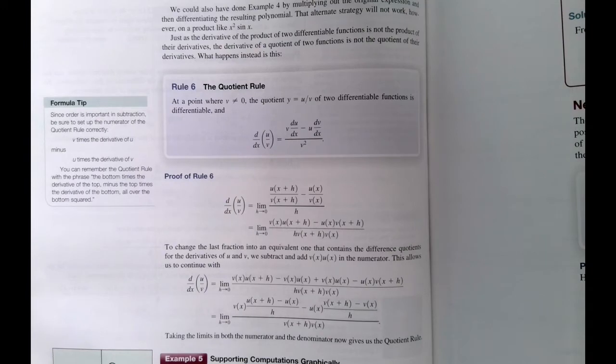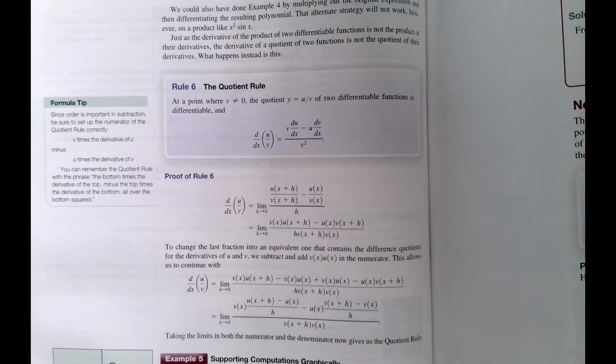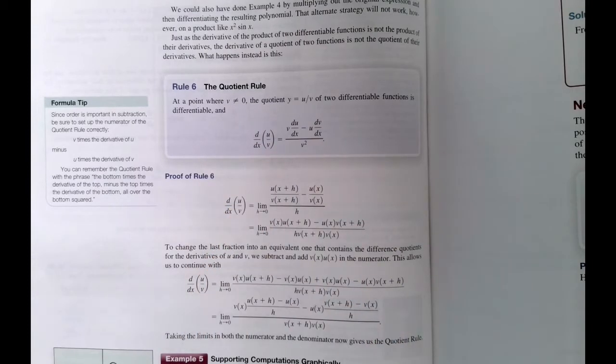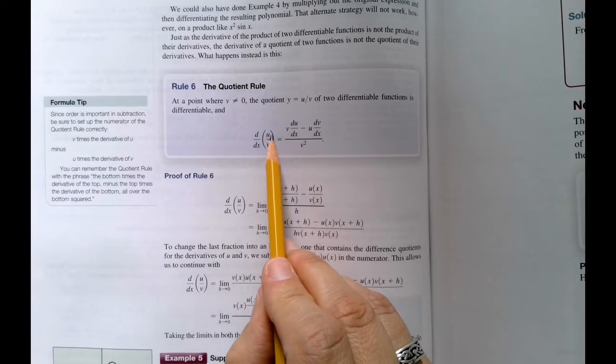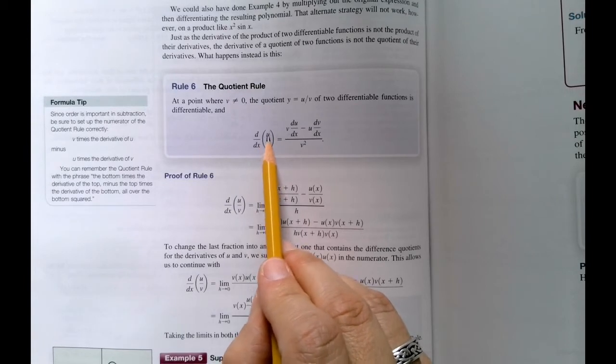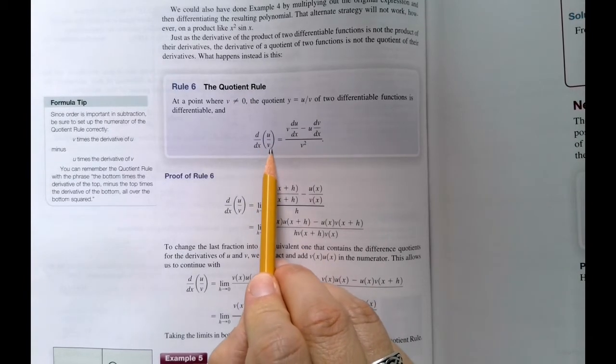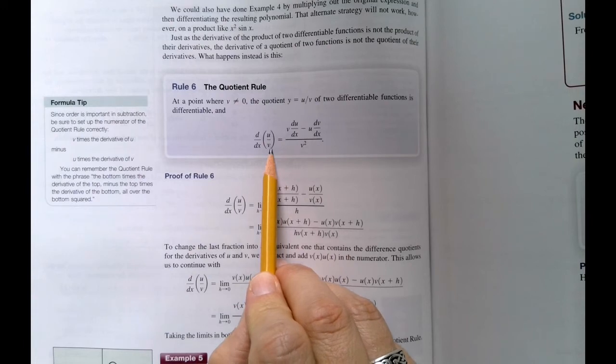Quotient rule is a little bit different than product rule. As you can see, it's definitely more complicated. So what this says is the derivative of a quotient. So u is going to represent whichever quantity is in the numerator spot, and v will represent whichever quantity is in the denominator spot.